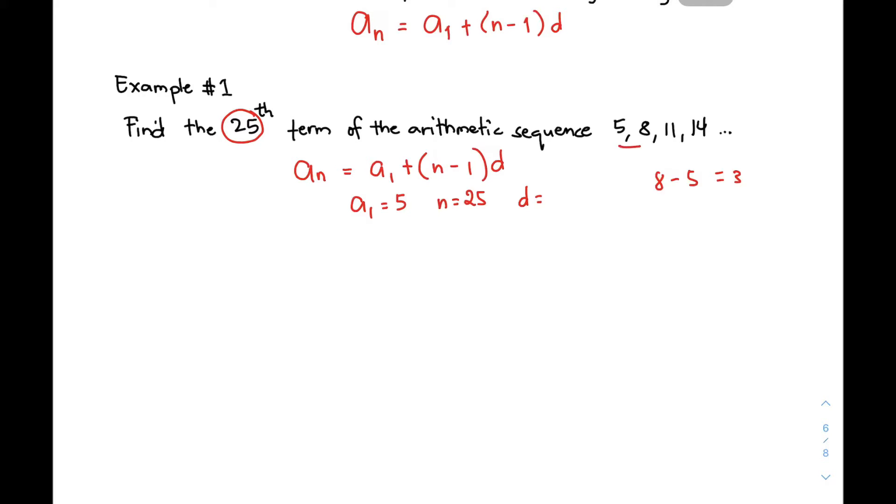Secondly, you need to subtract the second term from the third term. That will be 11 - 8 = 3. And then, the third term subtracted from the fourth term, you will be using 14 - 11. That will be equal to 3. Look at their differences, lahat sila yung 3. Therefore, the common difference is equal to 3.